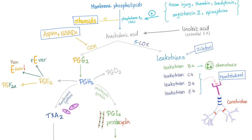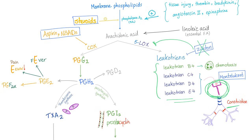Let's go to the leukotrienes. We have leukotriene B4 for chemotaxis, and C4, D4, E4. How to inhibit them? We have a lipoxygenase inhibitor called zileuton, which inhibits conversion from arachidonic acid into leukotrienes. If zileuton doesn't work, we have another chance at the receptor level — leukotriene receptor inhibitors such as the great montelukast.